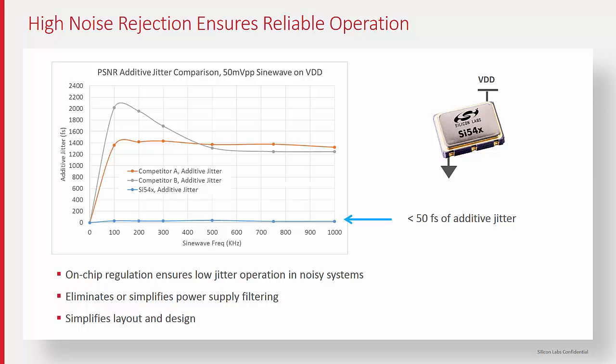Many cheaper oscillators and clock generators don't have sufficient power supply noise filtering on their chips. All it takes is just a small amount of power supply ripple, and the jitter can easily be ten times higher than advertised on a data sheet that only shows ideal conditions.